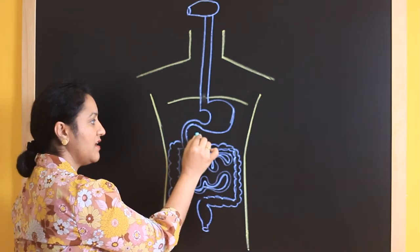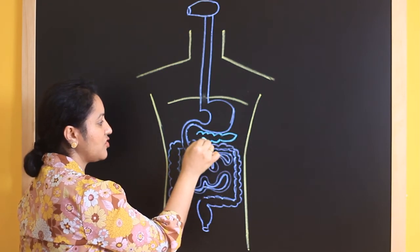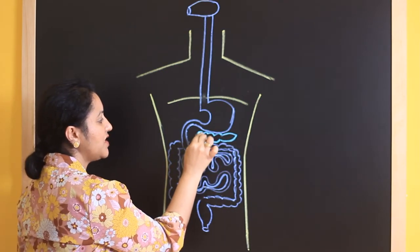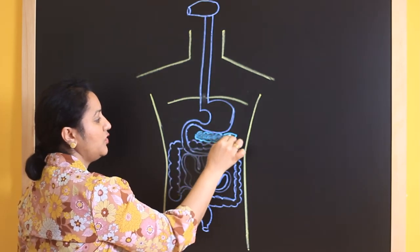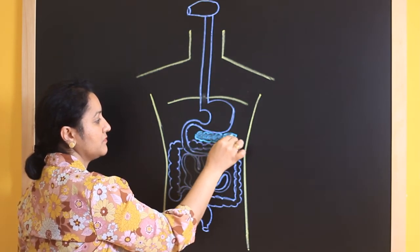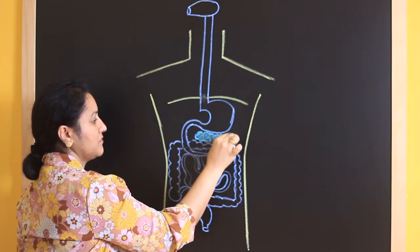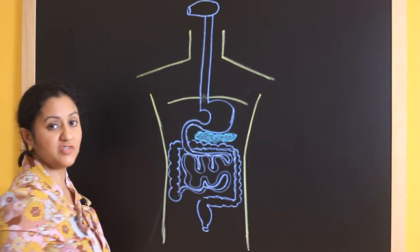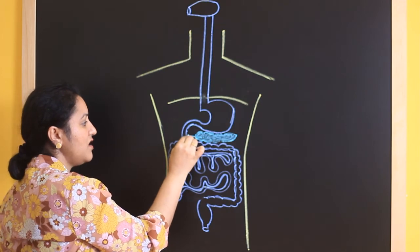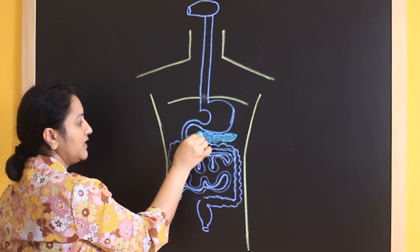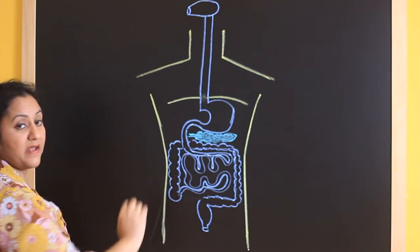Here comes the pancreas. Pancreas they are leaf shaped structure. So draw pancreas here and you can shade it using your pencil. But don't use any colours. Leaf shaped pancreas. And the pancreas pour its digestive juice into the small intestine through a duct. This is a duct of the pancreas which is called as a pancreatic duct.